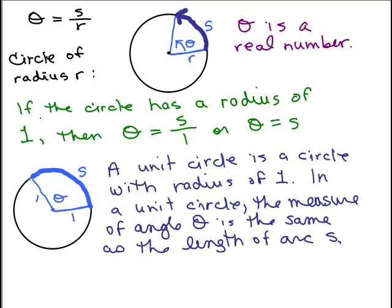We noticed that if the circle has a radius of 1, if r is 1, then we could just have theta as S over 1, so theta is the same thing as S. Look at this picture, the second circle.